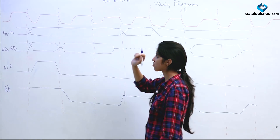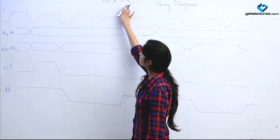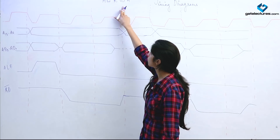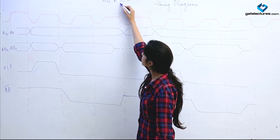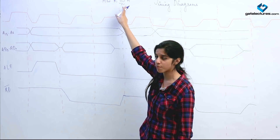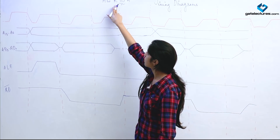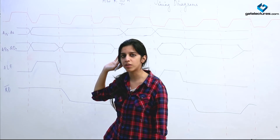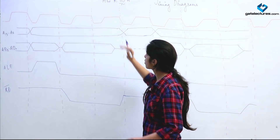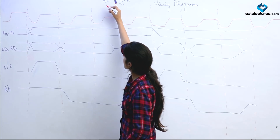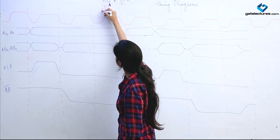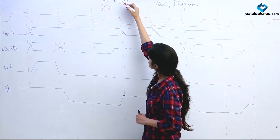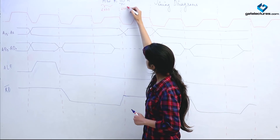We take a simple instruction: MVI B, 03H. This instruction loads the data 03H into register B. All instructions are pre-loaded in memory. Suppose the starting address of this instruction is 2000H. MVI B is a 1-byte instruction, so the address for the data 03H is 2001H.